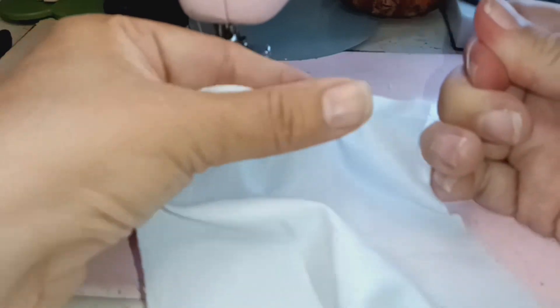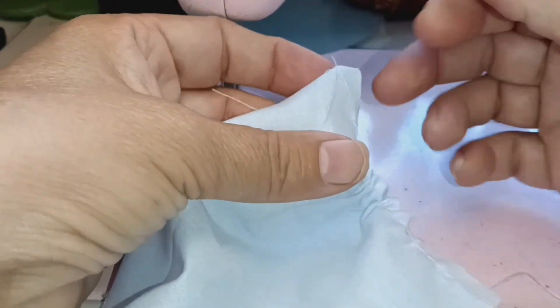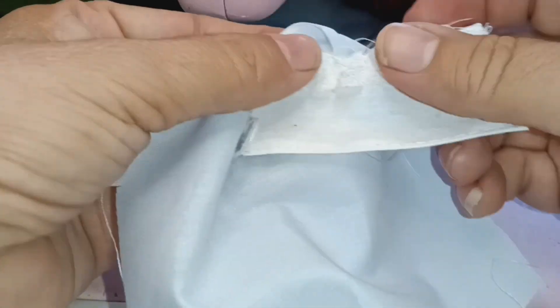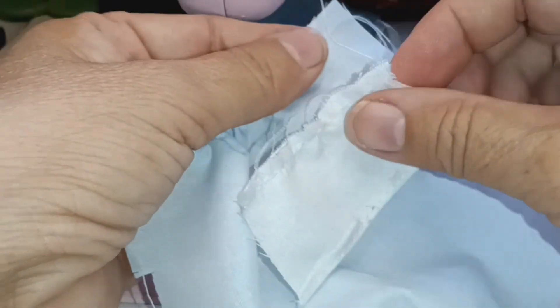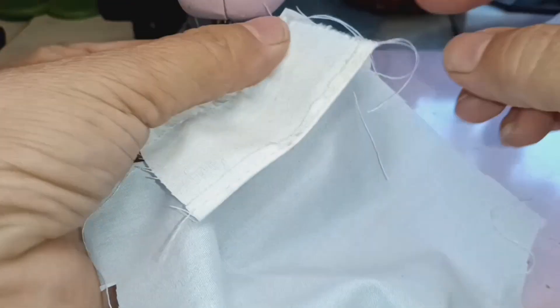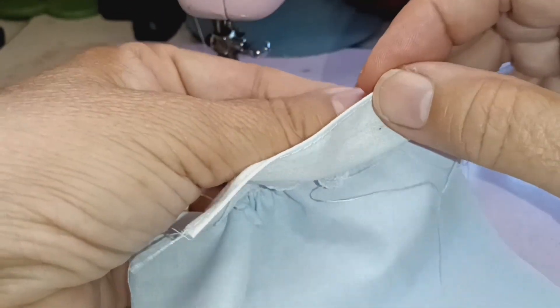We are going to gather it so that it matches the width or the length of our little lace piece. The lace part goes facing the fabric and this part when we fold it, it's going to be nice and neat.